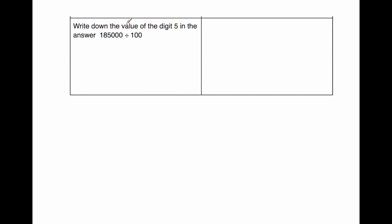Our next question says, write down the value of the digit five in the answer to the question 185,000 divided by 100. So we're dividing by 100, so each of the digits will move two columns to the right.